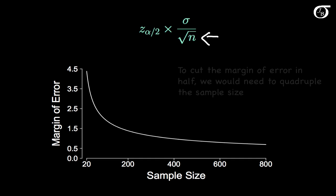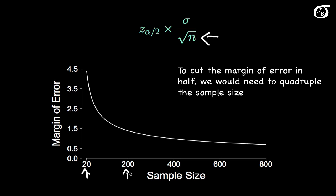So if we wanted to cut our margin of error in half, we would need to quadruple our sample size. And so there are diminishing returns here. When we increase the sample size from 20 to 200, say, there is a dramatic reduction in the margin of error. But an increase in the sample size from 600 to 800 doesn't have nearly the same effect.